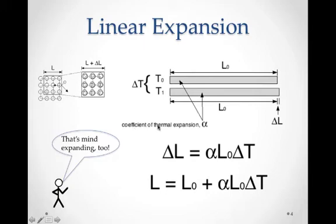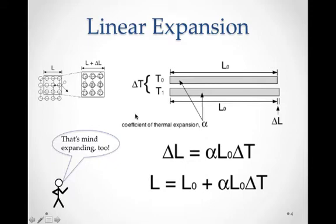A third factor is called the coefficient of thermal expansion, which depends on the material itself. Different solids and liquids expand at different rates depending on the type of atom or molecule they are. We usually find this experimentally — it reflects how much different atoms need different amounts of elbow room because of their size.